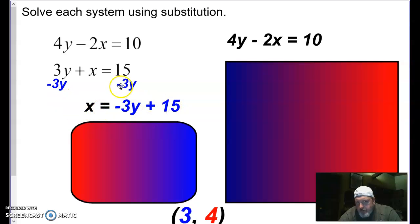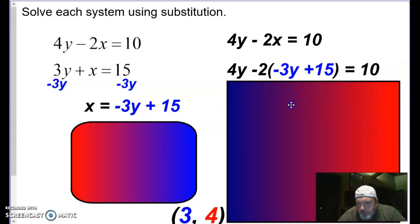So x is equal to negative 3y plus 15. Now that I have x by itself, I am going to plug this value into this top equation right here for x. And so that's what you're going to see. I have substituted or replaced x with negative 3y plus 15 because that's what x equals.